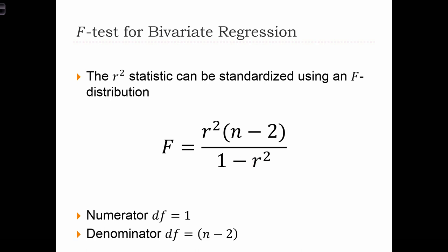Recall that F is a distribution that depends on two degrees of freedom parameters. In this case, in simple bivariate regression, the numerator will always have 1 degree of freedom, and the denominator will have n minus 2 degrees of freedom.